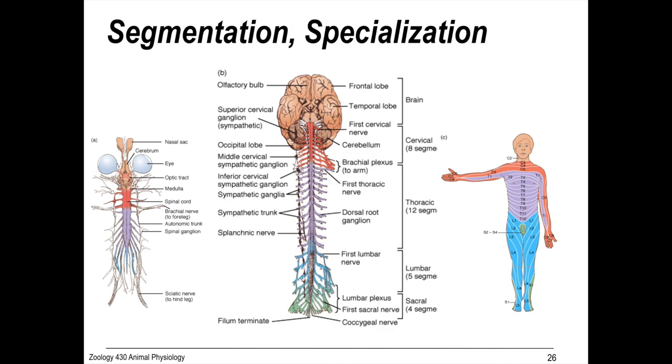Even though our segments have evolved, our brain and spinal nerves still retain segmental organization. The vertebrate body plan is developmentally segmented into regions. And each segment has its own vertebra and spinal nerve. So humans have eight cervical segments.